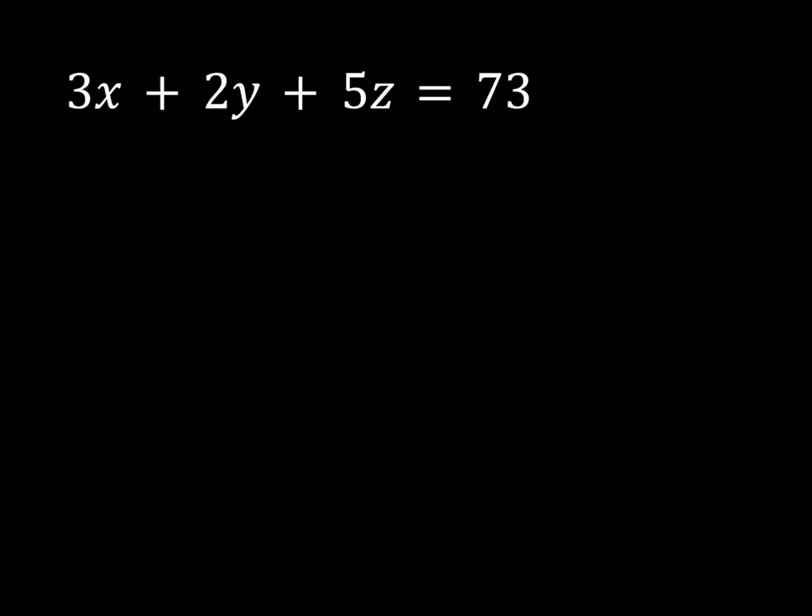We have 3x plus 2y plus 5z equals 73, and we're going to be looking for integer solutions, not necessarily positive integer solutions. So how do we go about this?